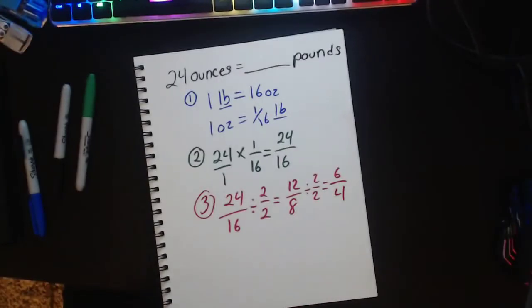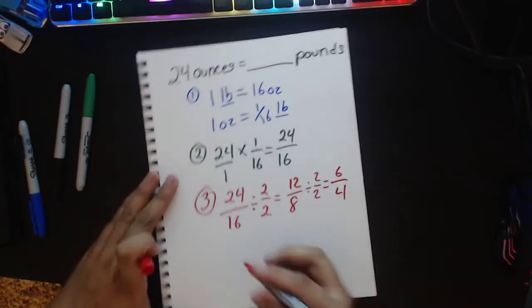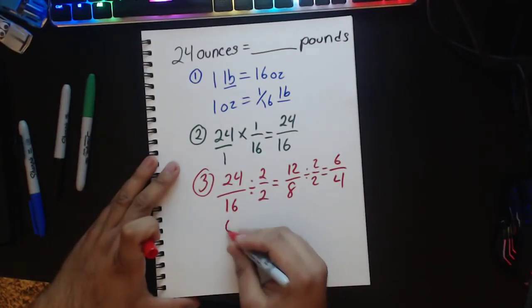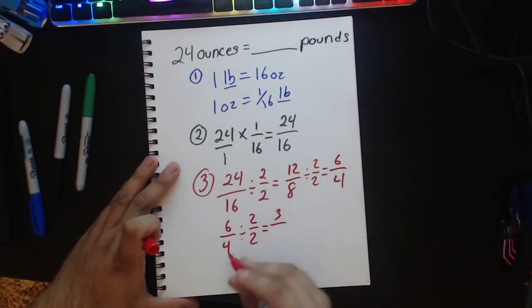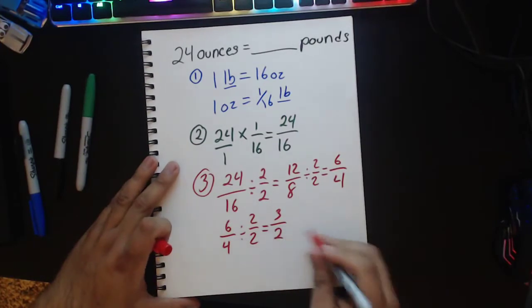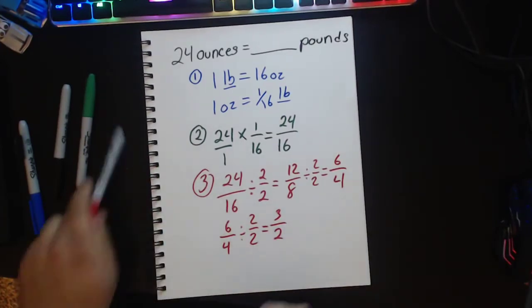Now I can convert that even further. We can go further with this, right? So I'm going to rewrite that. I'm still simplifying. So I'm going to use 2 over 2 again. 6 divided by 2 is 3 and 4 divided by 2 is 2. Good job guys. So now I have 3 over 2.